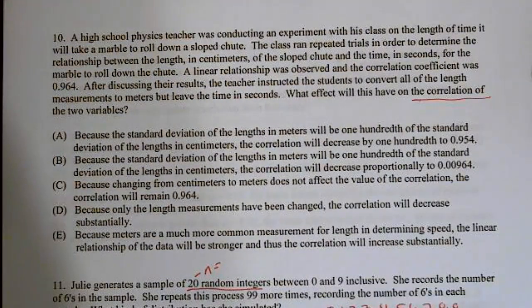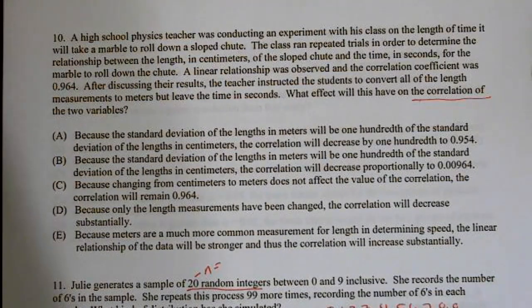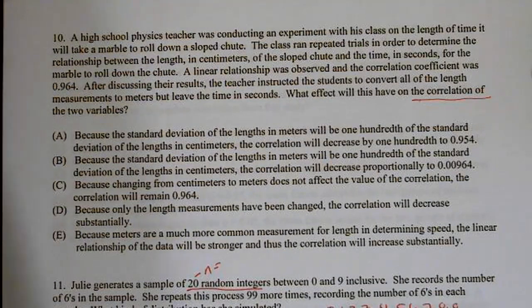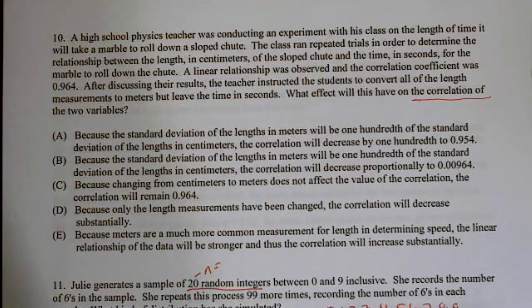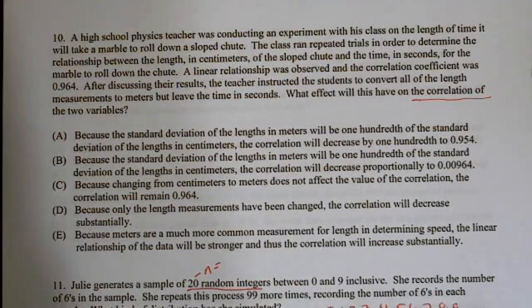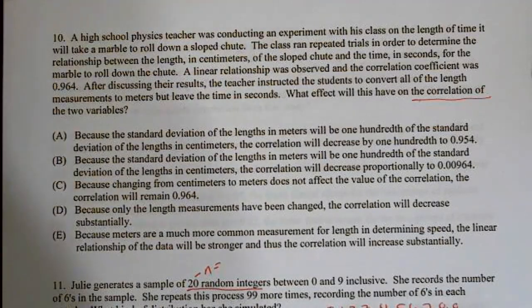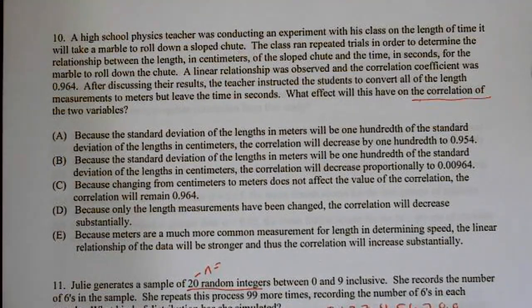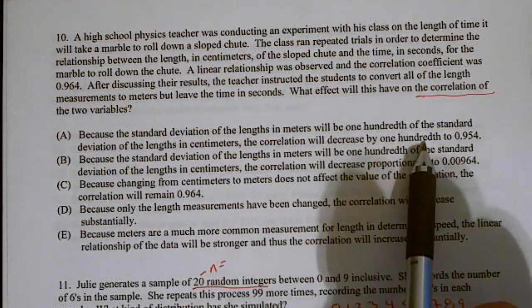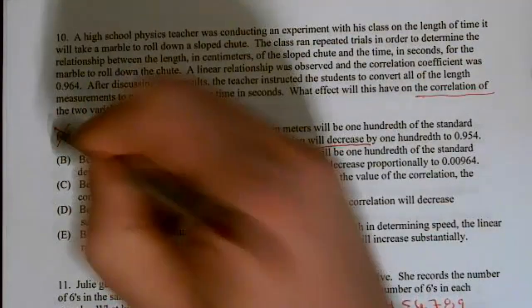What effect will this have on the correlation coefficient? The answer is it won't. We didn't change anything, we did not change the relationship. We just changed our units. Changing of units, multiplying - if you multiply everything by a constant or add a constant, it will not impact the correlation coefficient. The correlation coefficient would only be impacted if we actually had the data change.